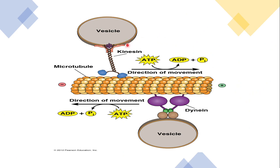These are the kinesins and dyneins. Kinesins always move in the positive direction and dyneins always move in the negative direction. This is a microtubule, composed of alpha and beta subunits. They are assembled and disassembled. When kinesins move in the forward direction, these microtubules disassemble and also reassemble. Kinesins move in the positive direction while dyneins move in the negative direction.